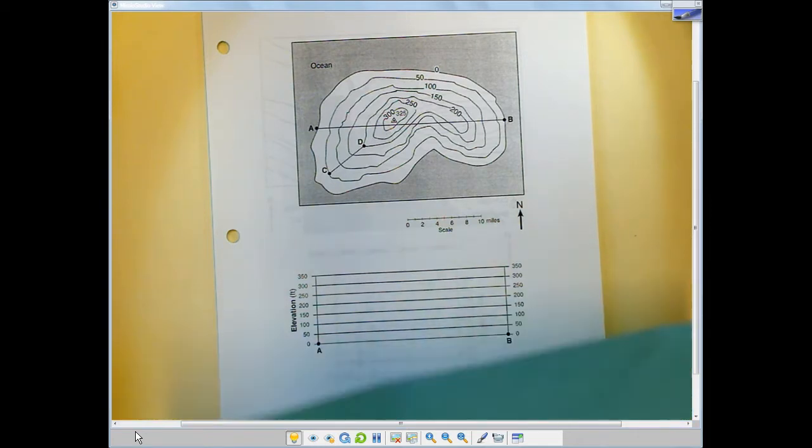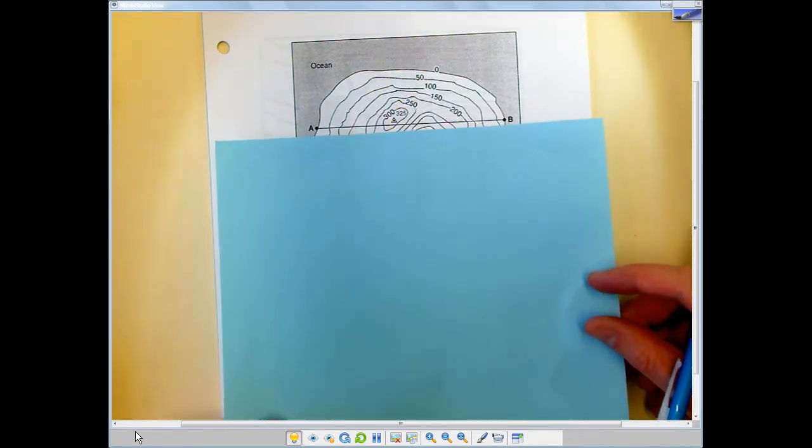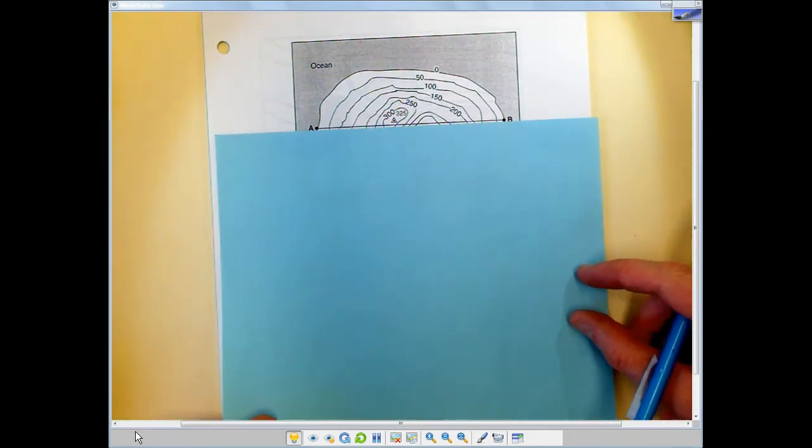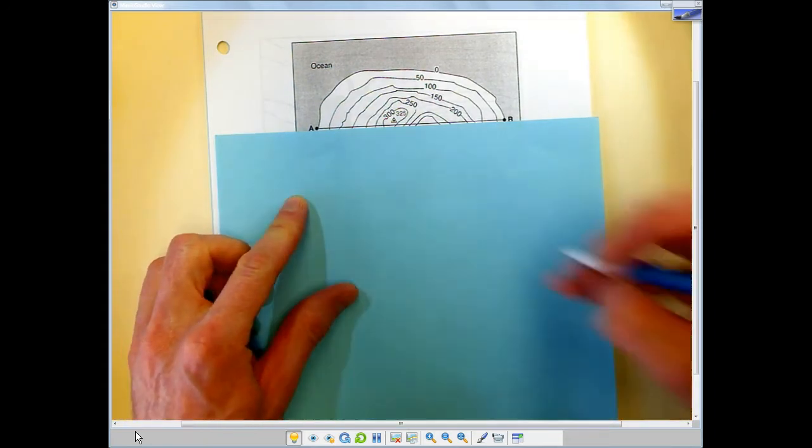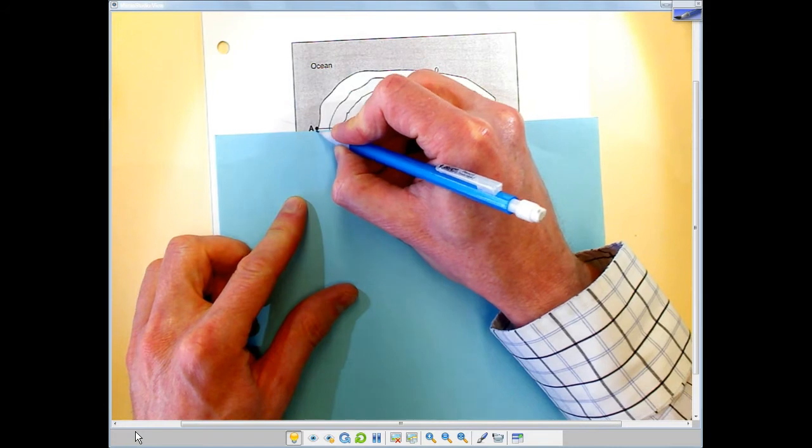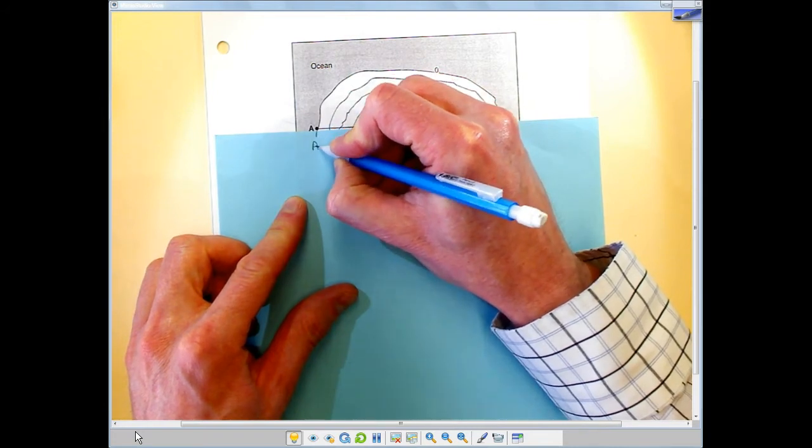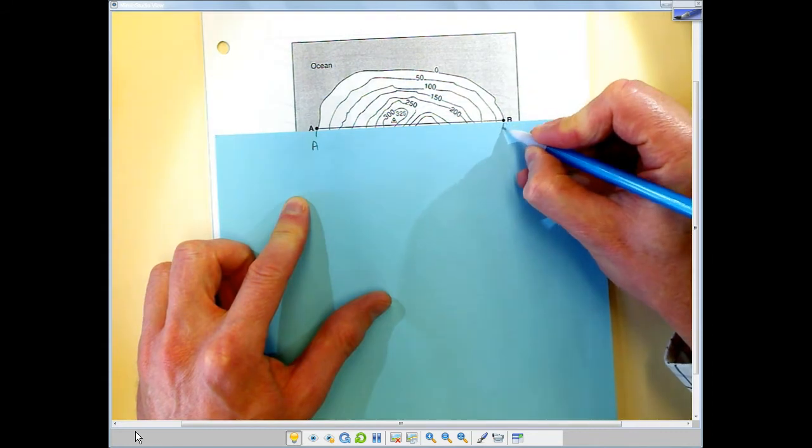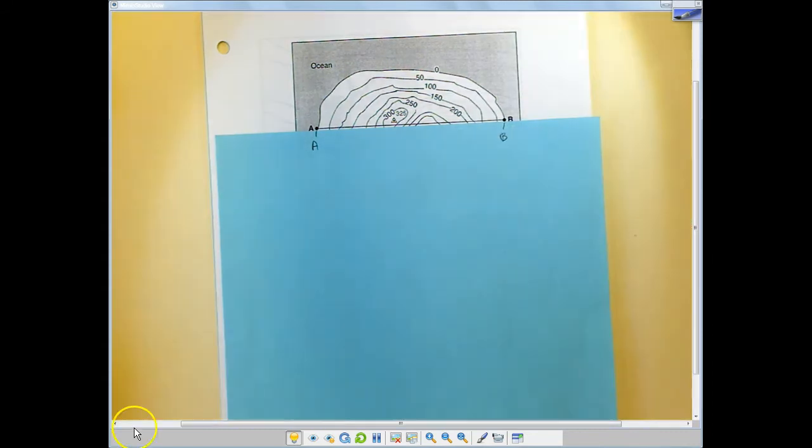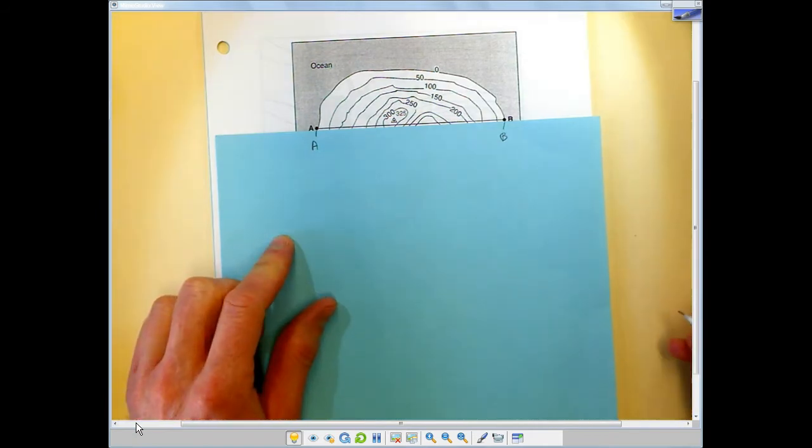So if you take a piece of scrap paper, you can line it up and you're going to make your mark at A and B first and label it as such, just in case it comes off. So here we can see that A is at zero and B is at zero.